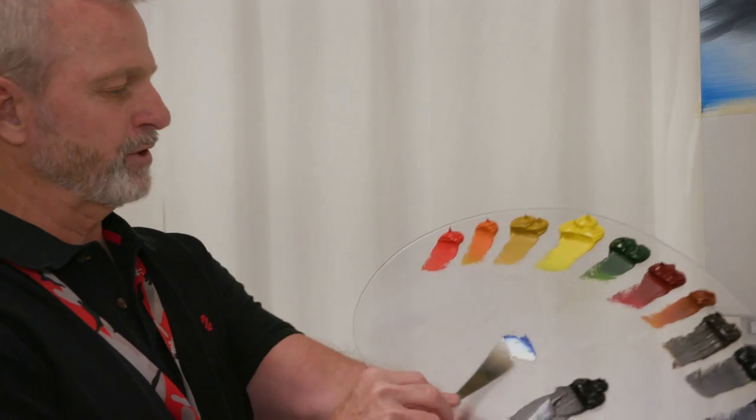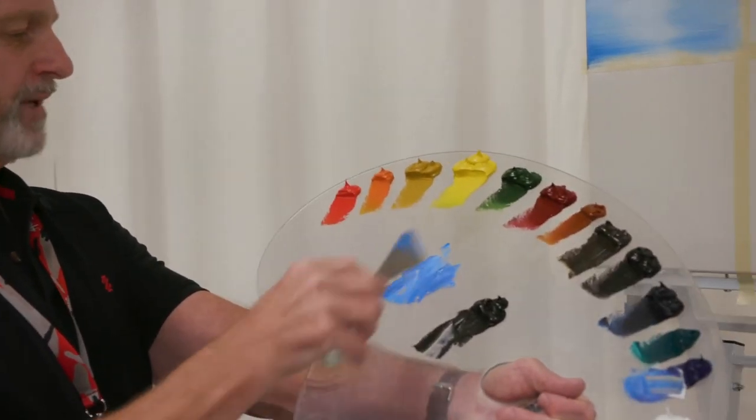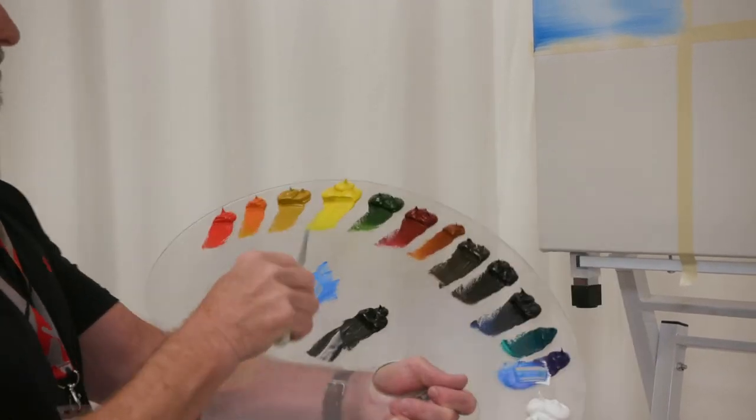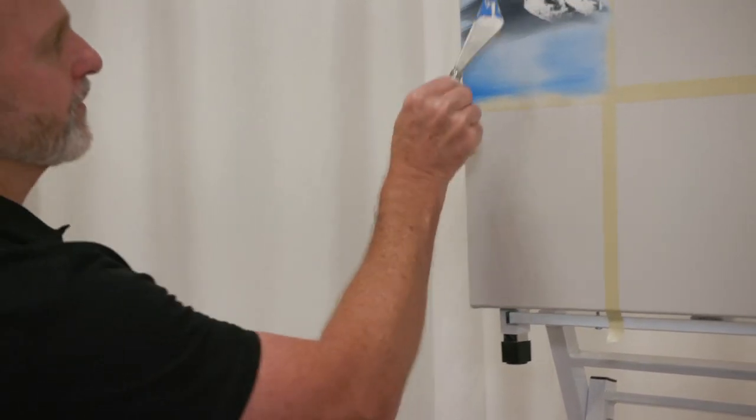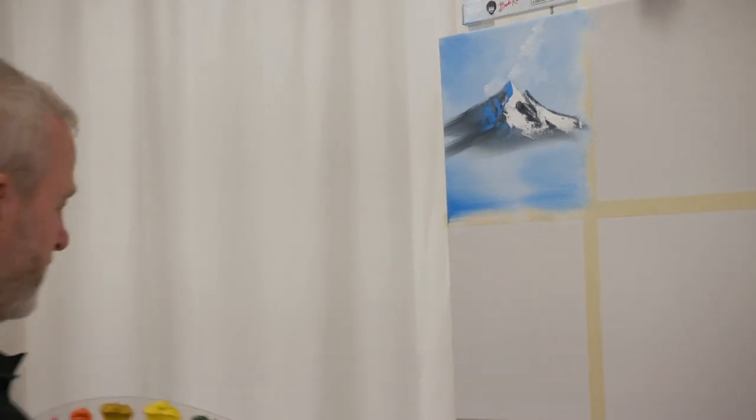So if I take a little bit of the phthalo blue and the white and mix it together, that'll give me a nice shadow color. And this will give a little bit of more depth to the mountain, make it a little less flat. And just pull the other direction, get a little bit of a shadow going there. Just that easy.